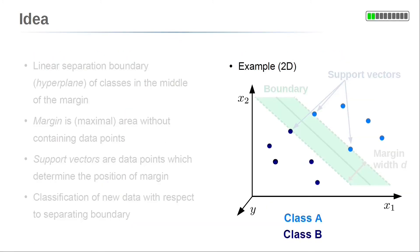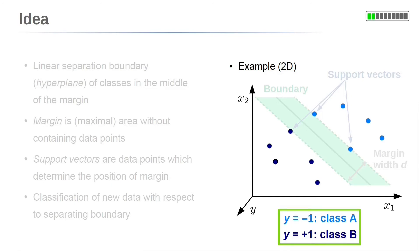Let's take a look at the idea of the support vector machine in more detail. On the right side, we consider a two-dimensional example with the two classes A and B represented by the blue dots. In the previous lecture on logistic regression, the classes A and B were encoded by a target variable Y — for Y equals zero, we had class A, and for Y equals plus one, we had class B. In this lecture, we use a different encoding to simplify the notations of the model later. We choose Y equals minus one for class A and Y equals plus one for class B.